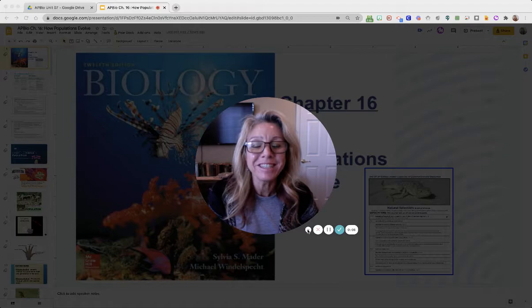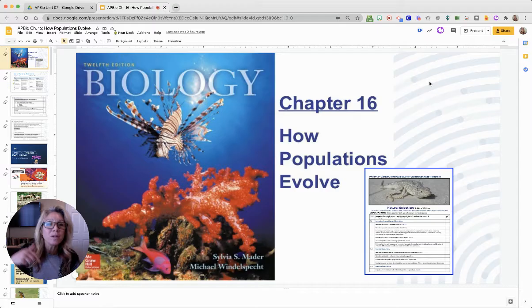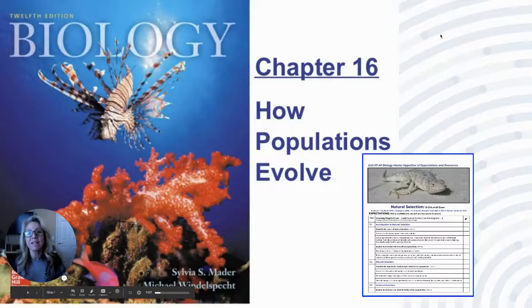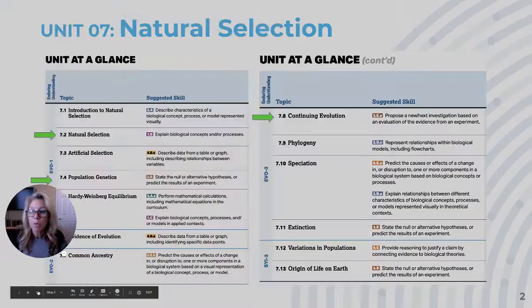Hi, I am Mrs. Sloan and this video is intended for my AP Biology students. What we're going to be talking about today is how populations evolve. I encourage you, if you haven't watched my videos before, down in the descriptor of the video you will see a link to the notes that my students use, and that link contains this actual presentation. I also encourage you to visit my website or go to the College Board website to see the expectations for this unit — Unit 7: Natural Selection.